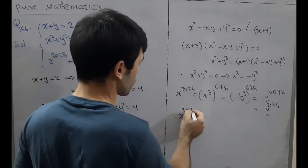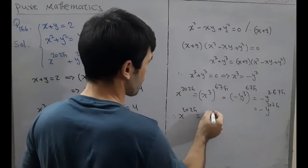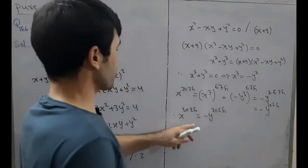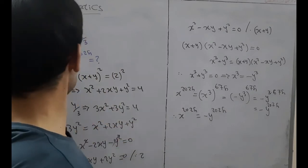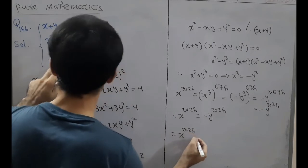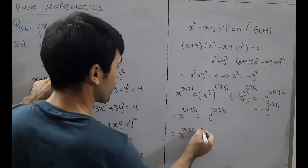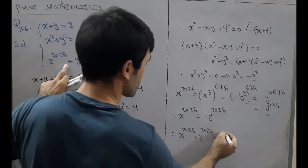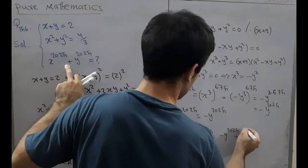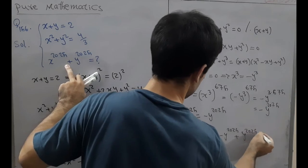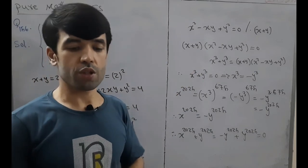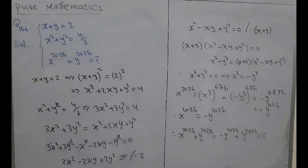Substituting back, x to the power 2025 plus y to the power 2025 equals minus y to the power 2025 plus y to the power 2025, which equals 0. That was the solution of this question. Thank you for watching.